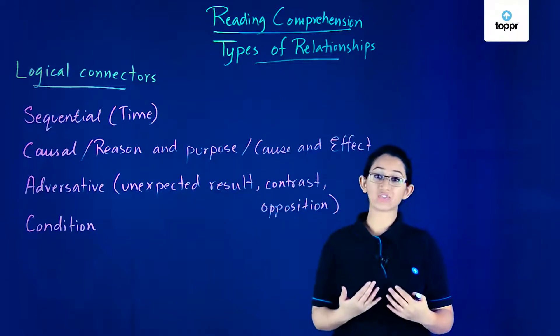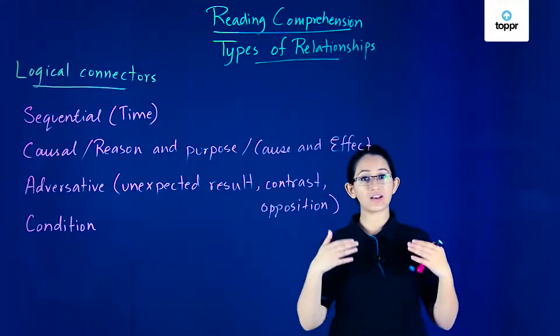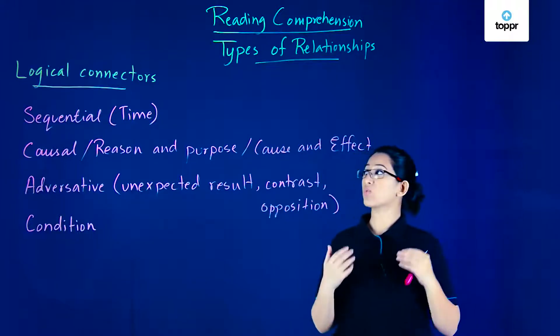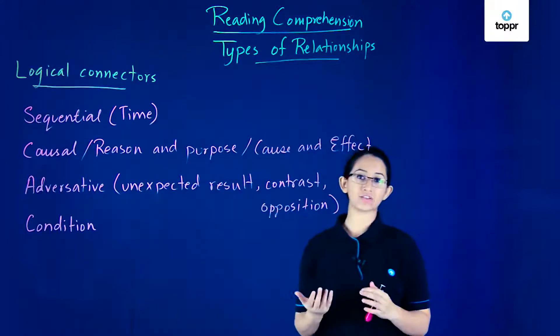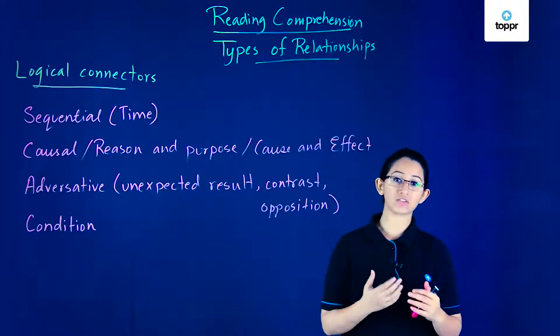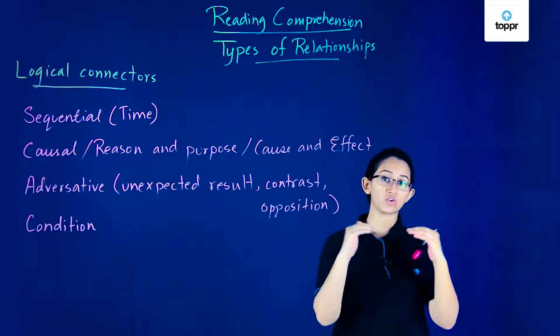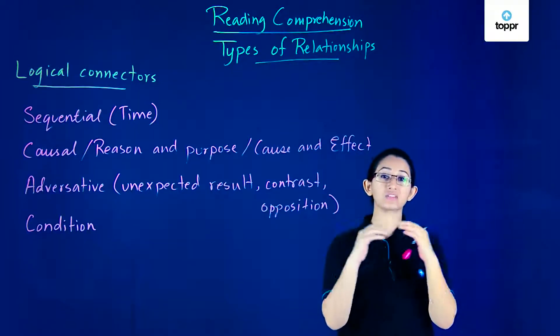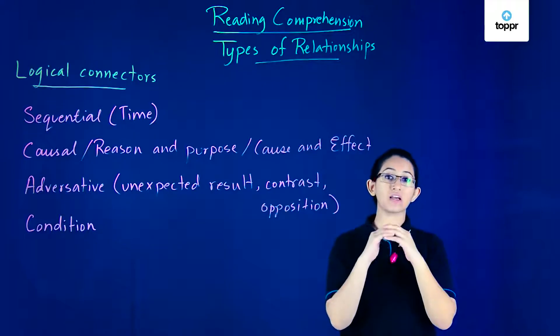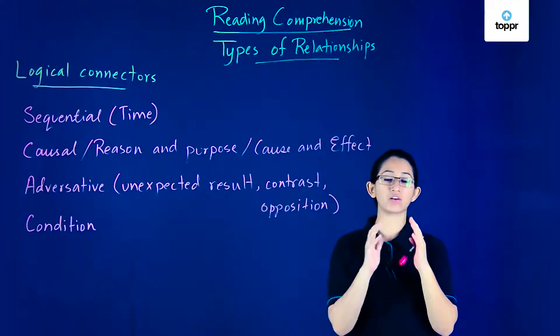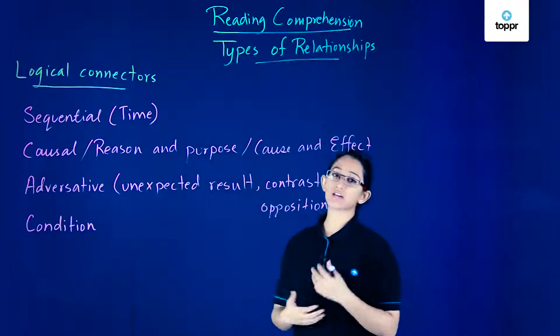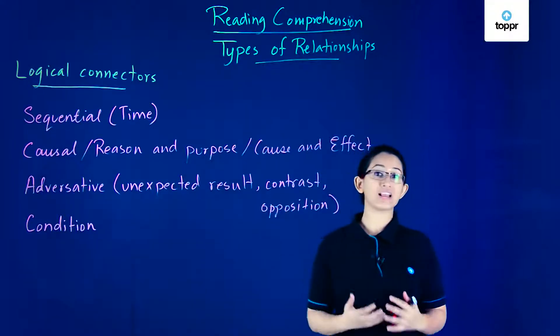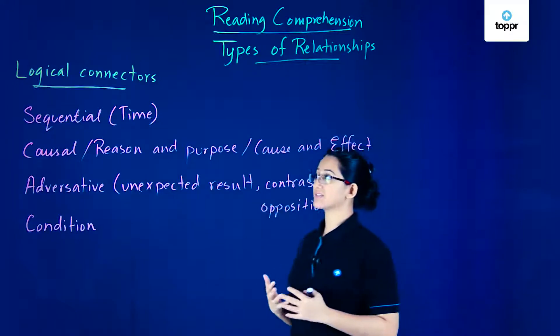Something that could really help us understand the relation between two particular sentences or paragraphs are what we call logical connectors. Logical connectors are basically ways in which your sentences or statements connect together because they have a certain relationship to each other or mutually share a particular relationship. Let's take a look at the types of logical connectors or the types of relationships that we have.